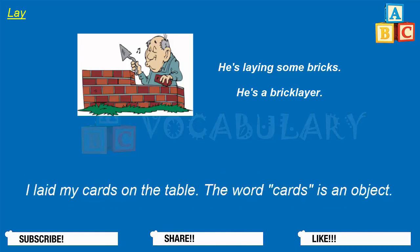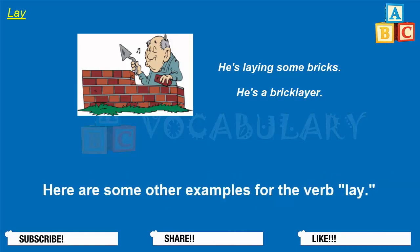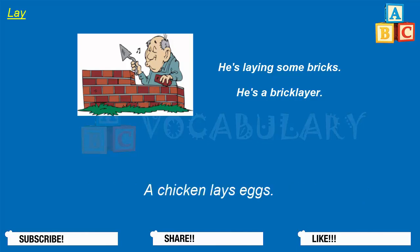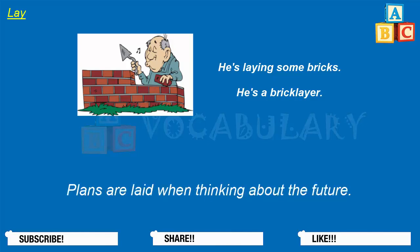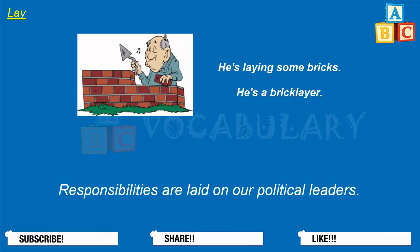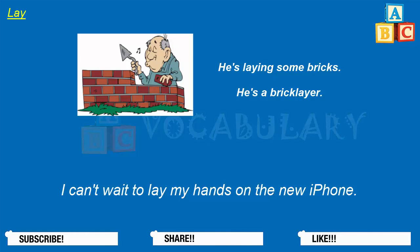You need to use an object after this verb because it's transitive. I laid my cards on the table — 'cards' is the object. Joe has laid out some plans for his new project — 'plans' is the object. A chicken lays eggs. A construction worker lays bricks. You can lay a bet if you like to gamble. Plans are laid when thinking about the future. Responsibilities are laid on our political leaders. People lay their hands on things and on other people. I can't wait to lay my hands on the new iPhone.